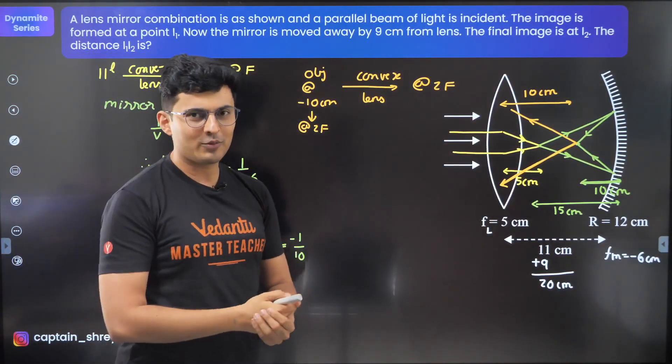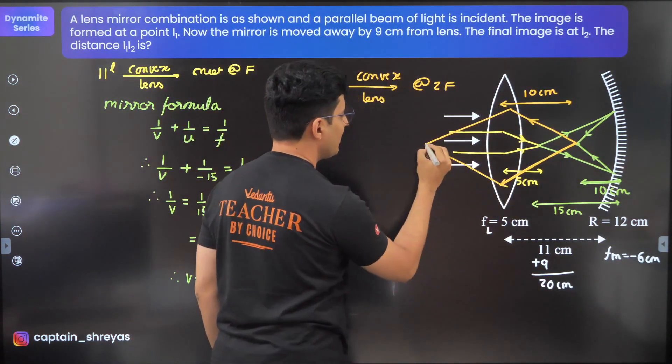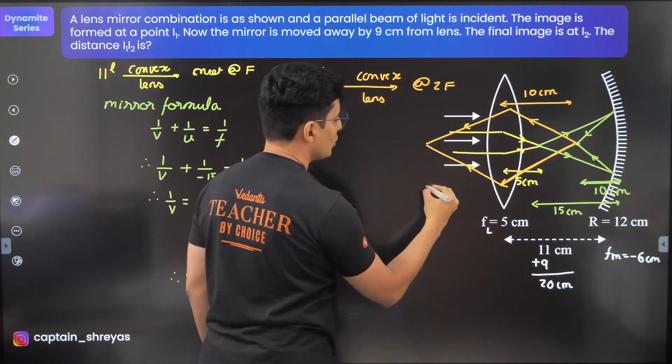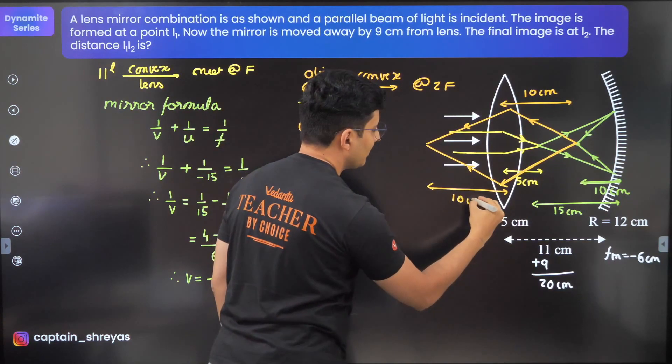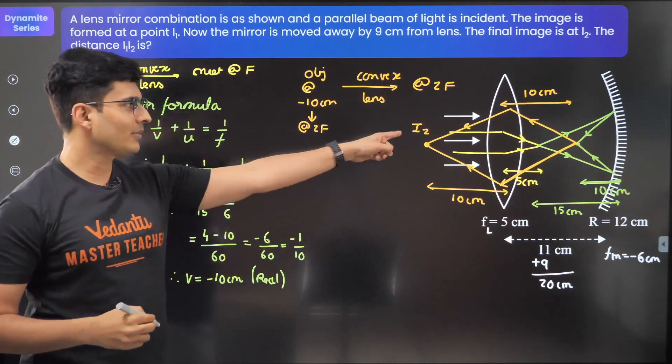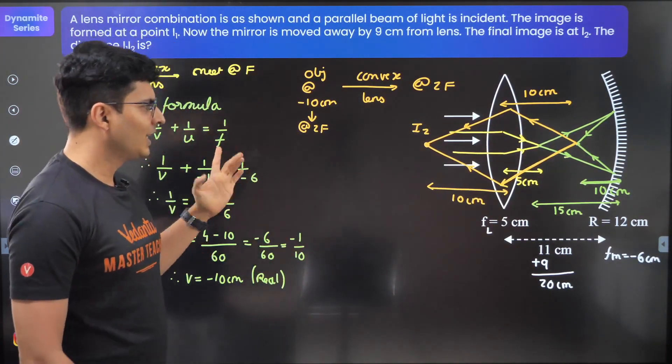I'm pretty sure you would have learned that in your ray diagrams for all the different kinds of lenses. Obviously the rays will meet over here, and this will be at 2f. So 2f is nothing but twice of 5, which is 10 centimeters. Hence this point is I2.